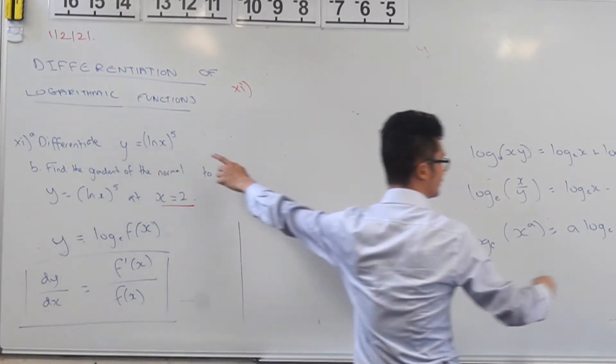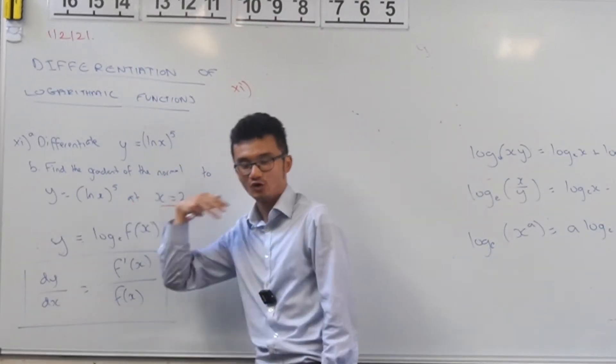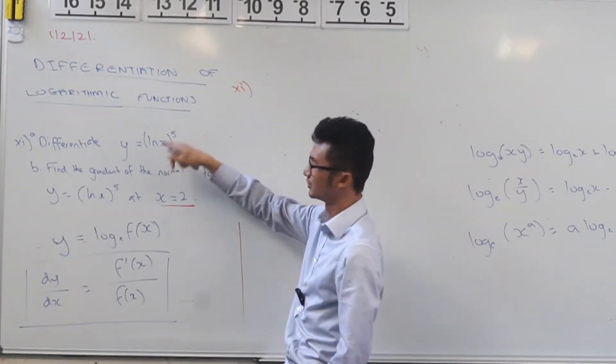Just a little note about this notation here - this is saying that this is ln x all to the power of 5, it's not ln of x to the power of 5.